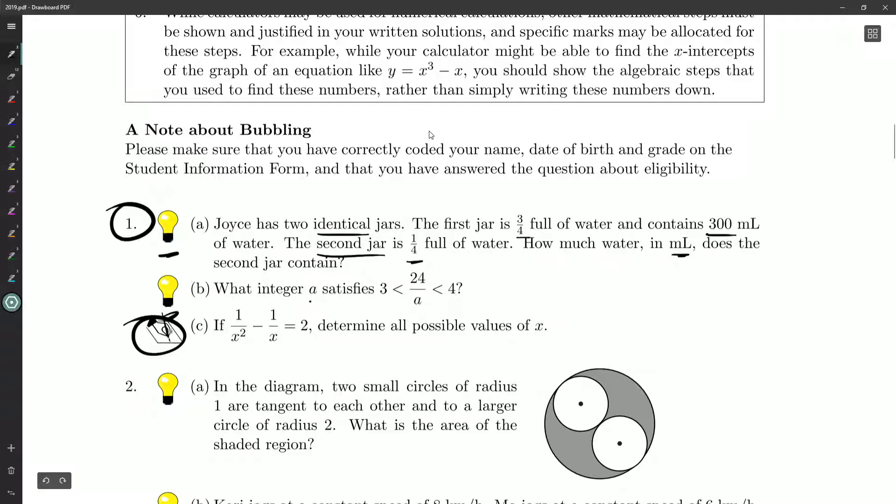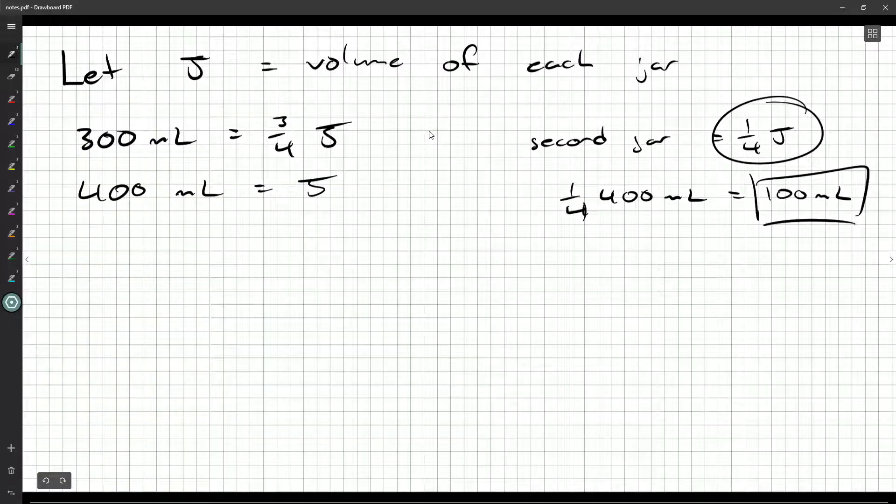Part B: What integer A satisfies 3 is less than 24 over A is less than 4? Okay, we've got a couple inequalities here. So when you have chained inequalities like this, I find it's easiest to just break them up and solve them individually.